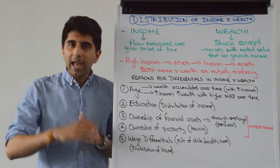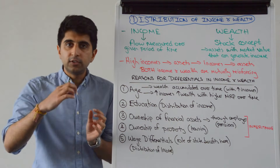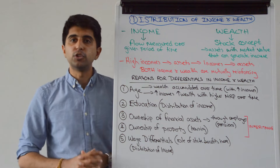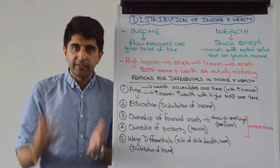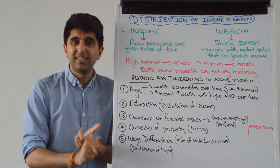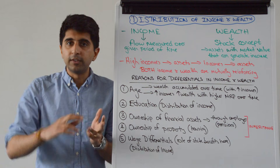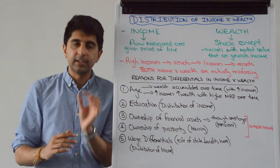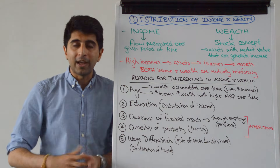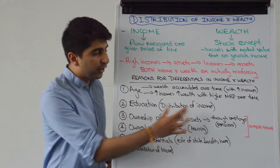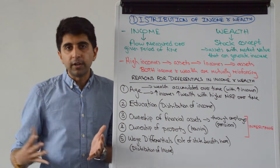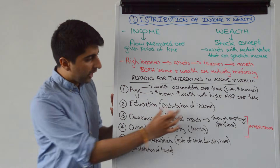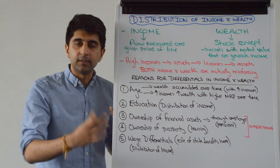A difference in education can be a key driver of differences in the distribution of income. The more qualifications somebody has — whether it's GCSEs, A levels, degrees, or university level — the greater the earning potential of that individual is likely to be compared to those who don't. And that is proven by statistics: those that go to university, on average, are going to earn more than those who don't.